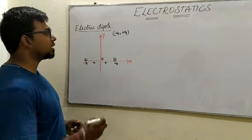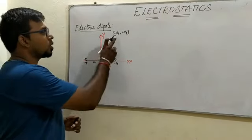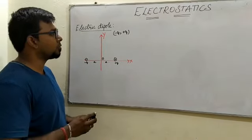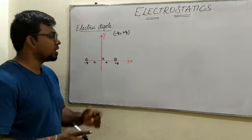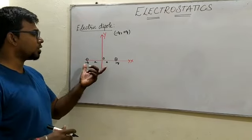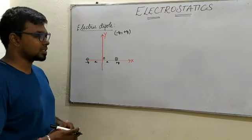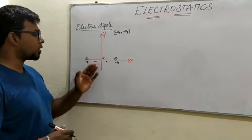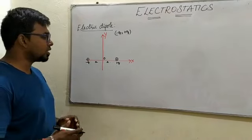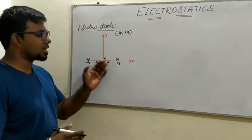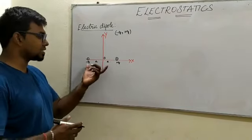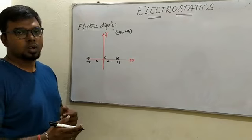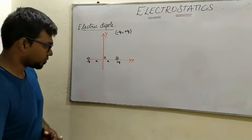Let us take two equal and opposite charges, minus q and plus q. They are positioned on an x-axis — one charge to the left of the origin and another charge to the right of the origin. They are separated by a small distance of 2a.